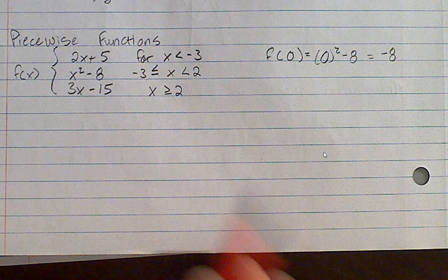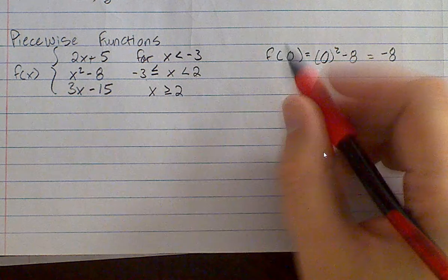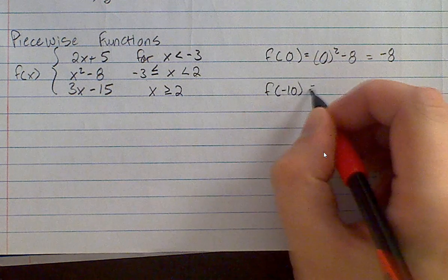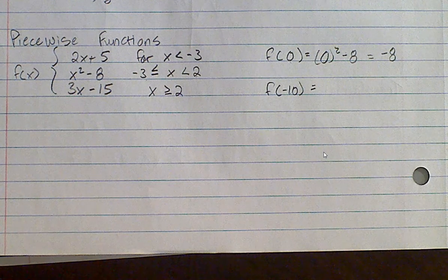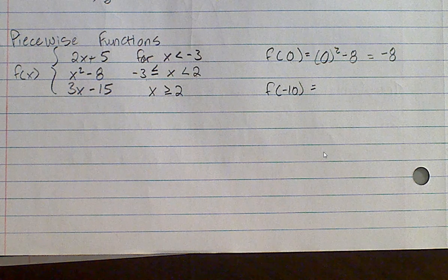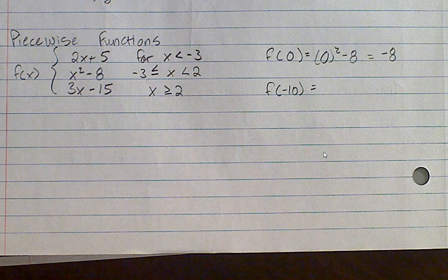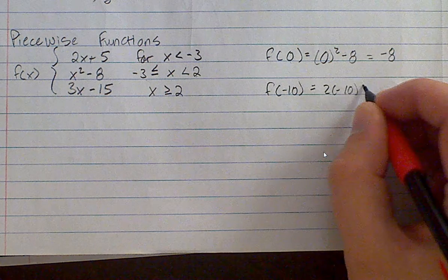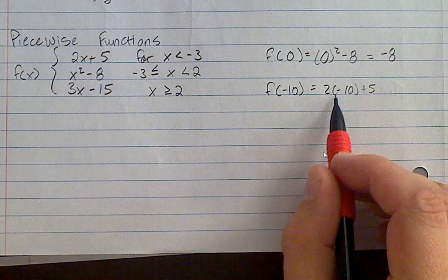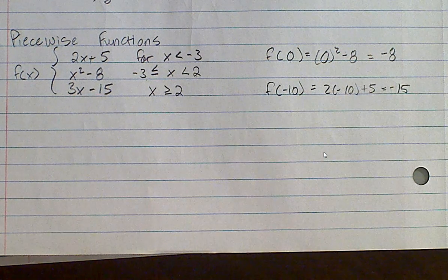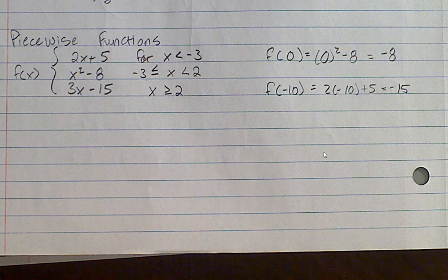Okay. So back to this. How about if I wanted to find out the value of f of negative 10? Anybody want to give a try as to which of those three functions you'd use for f of negative 10? The first one. 2x plus 5. First one, 2x plus 5. So you're going to do 2 times negative 10, and then you're going to add 5 to it. So negative 20 plus 5. Negative 15.